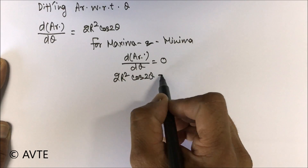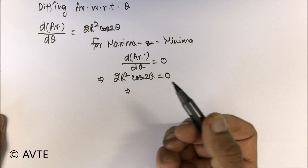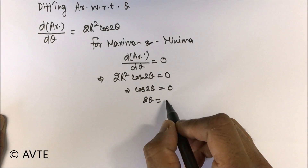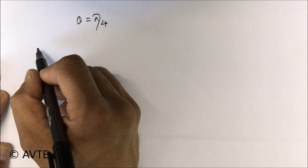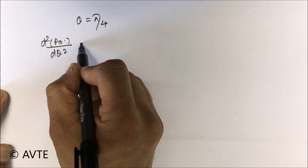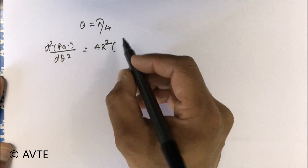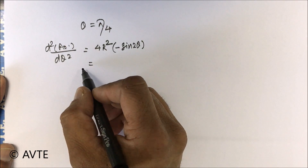When dealing with statement problems involving triangles and rectangles, we find only the principal angle. Setting the first derivative to zero gives 2 theta equals pi by 2, so theta equals pi by 4. Since we have a critical point, we must do the double derivative. Differentiating again gives d²A/dθ² equal to negative 4R squared sine 2 theta.